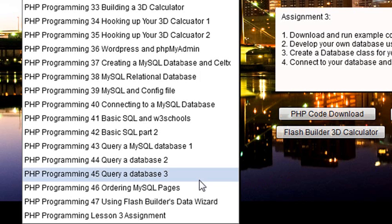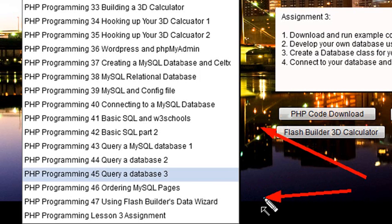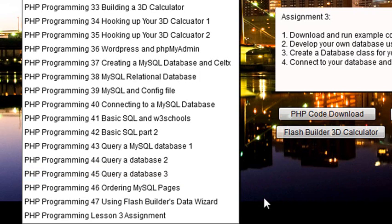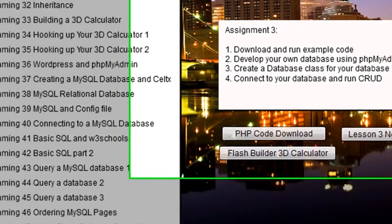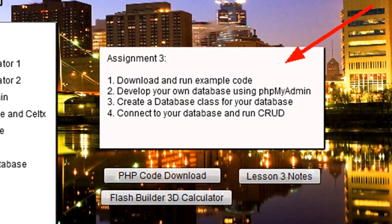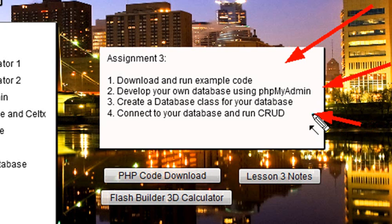So it's important that you actually do learn all of this. Then in Flash Builder, once you auto-generate that code, you'll be able to modify it very easily. So that's Lesson 3. As an assignment, download and run all the example code. Develop your own database using phpMyAdmin. Create your own database class that talks to your own database, then connect it and run all the CRUDs. Once you start working with your own database, you'll have an emotional connection there and it'll mean a lot more to you. Go through my videos and once you work through all of that, go ahead and develop your own design and just go for it.